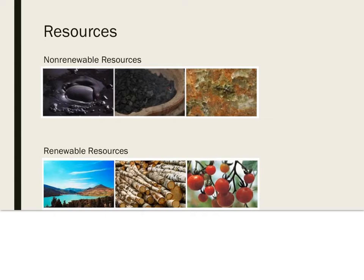There are two main types of resources: non-renewable resources and renewable resources. Non-renewable resources are used up faster than they can be produced. Fossil fuels, including oil and coal, are examples of non-renewable resources because it takes thousands of years to form them. Rocks, minerals, metals, and ores are other examples of non-renewable resources.